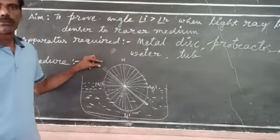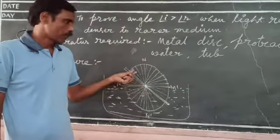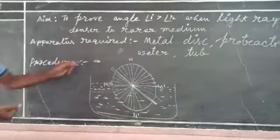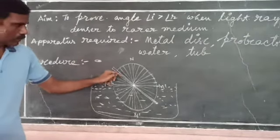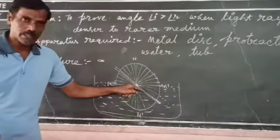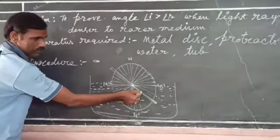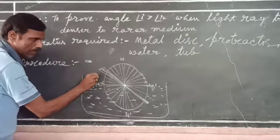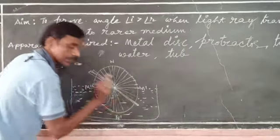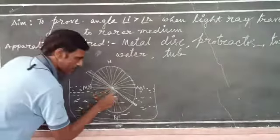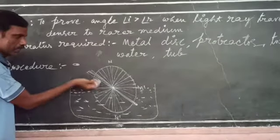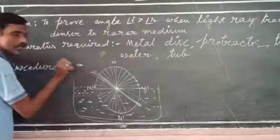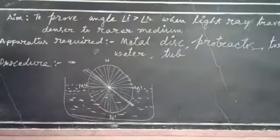Now try to observe the straw which is immersed in water from the other side of the disc. Adjust the straw which is out of the water such that both the straws appear to lie in the same straight line, or both the straws coincide with each other.